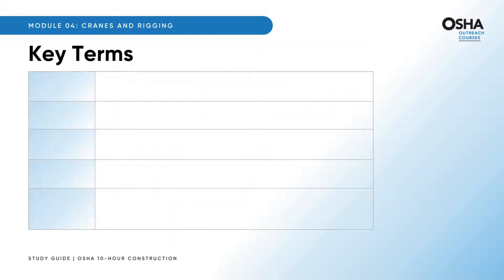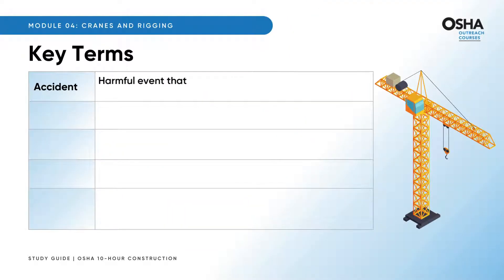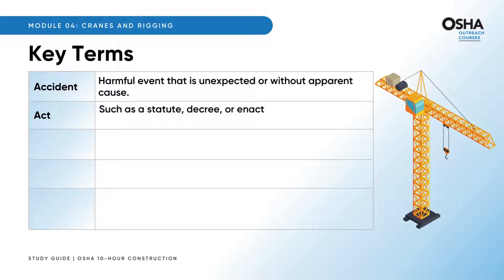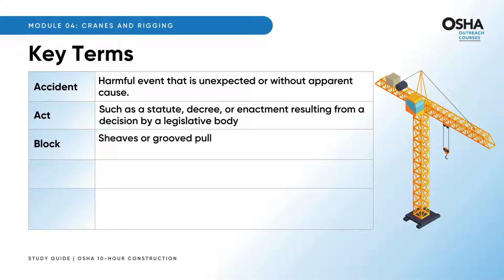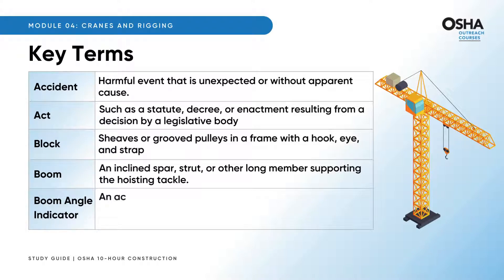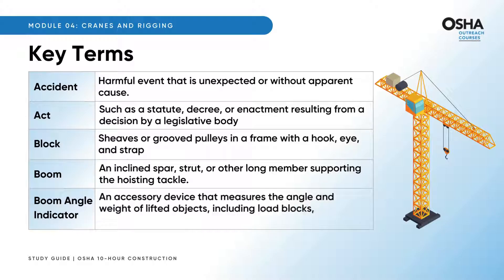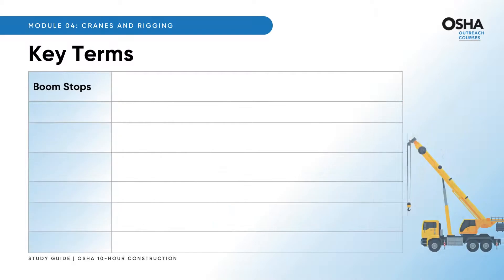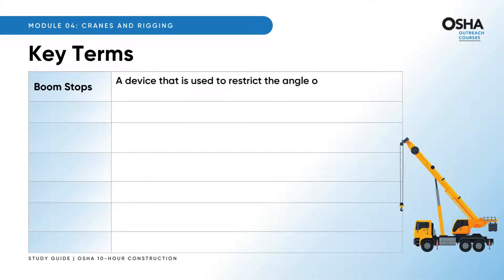The essential key terms are: accident — a harmful event that is unexpected or without apparent cause; act — such as a statute, decree, or enactment resulting from a decision by a legislative body; block — sheaves or grooved pulleys in a frame with a hook, eye, and strap; boom — an inclined spar, strut, or other long member supporting the hoisting tackle; boom angle indicator — an accessory device that measures the angle and weight of lifted objects including load blocks, hooks, wire ropes, rigging, boom, and ancillary attachments.